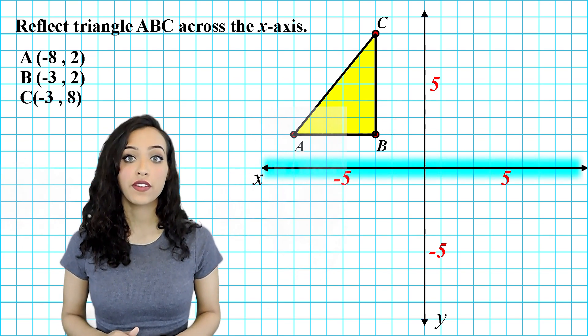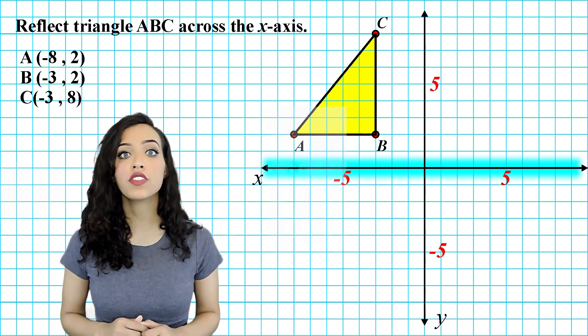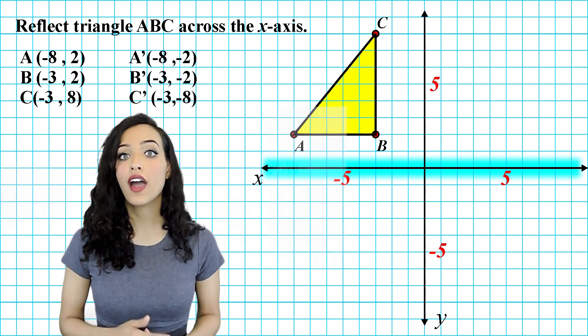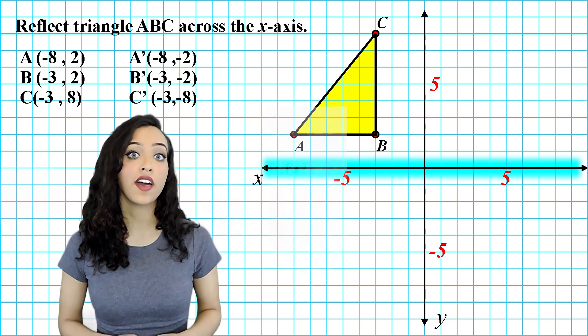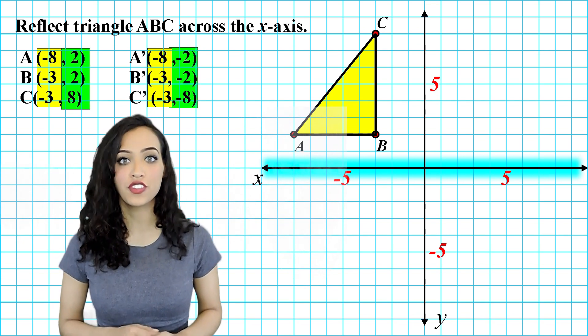Because we are reflecting our triangle across the x axis, we know that our x values are going to stay the same and our y values will become opposite. So we're going to write every x value the same and every y value opposite of its original.